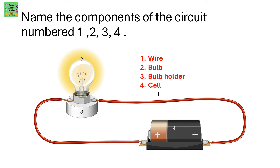Name the components of the circuit numbered 1, 2, 3, and 4. The first one is the wire, the second component is the bulb, the third one is the bulb holder, and the fourth is a battery or a cell.